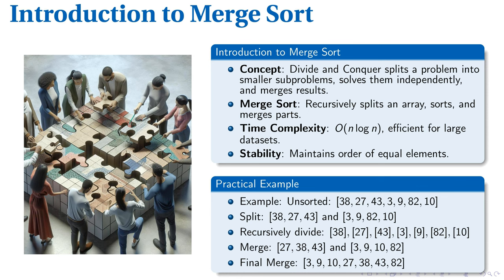MergeSort uses Divide and Conquer to efficiently sort arrays. Divide and Conquer involves breaking a problem into smaller, manageable sub-problems, solving each independently, and then merging the solutions to solve the original problem. For MergeSort, this means recursively splitting the array until each subarray has a single element, then merging these sorted elements back together. The time complexity is O(n log n), which makes it effective for sorting large datasets. Additionally, MergeSort is stable, preserving the relative order of equal elements.